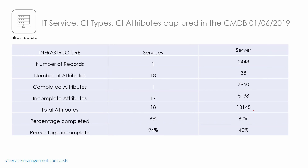Let's now have a look at infrastructure. In this case we've defined one service. In terms of our servers, we've got a large number — 2,448 servers — and the total attributes amount to 13,148. The percentage complete is at 60%, so this is where our focus needs to be. This may be accurate in terms of the total amount of records; however, we haven't actually got all the meaningful attributes back for our organisation.